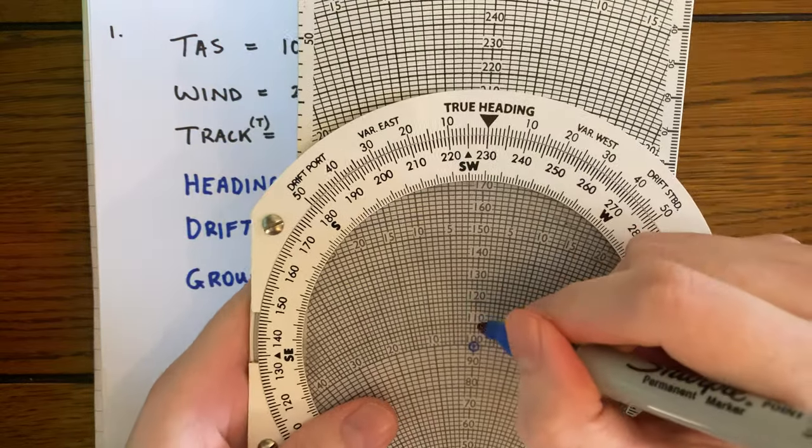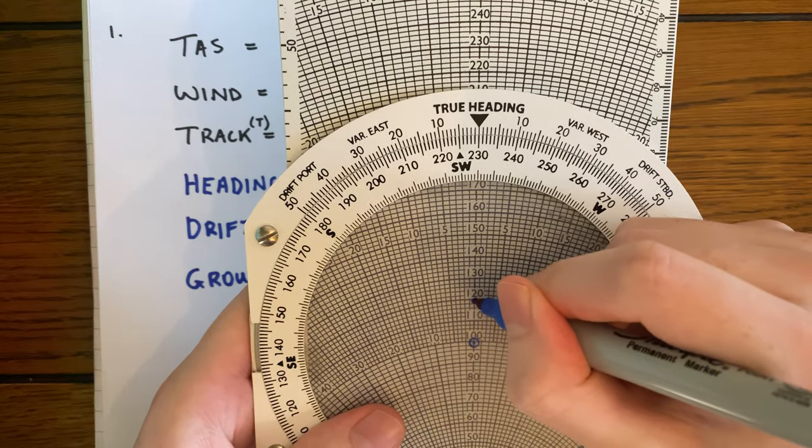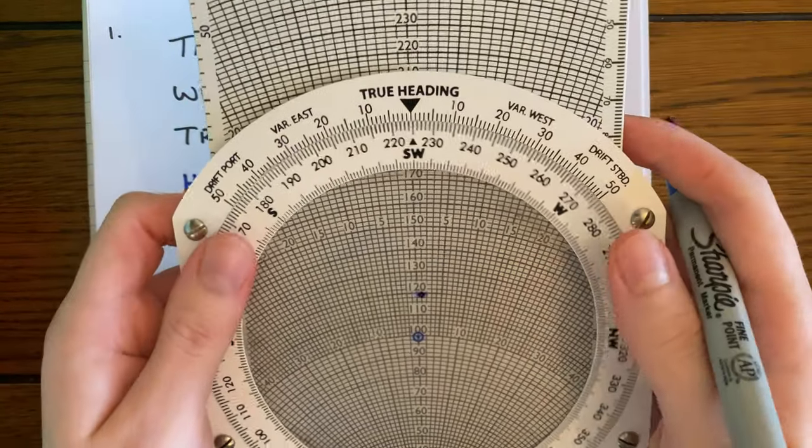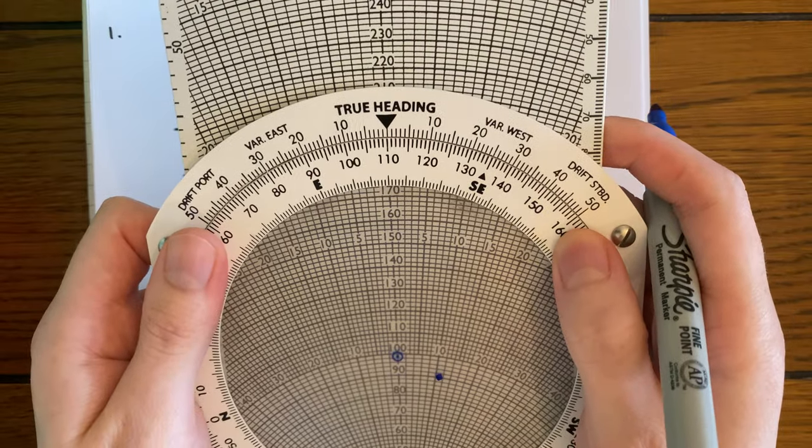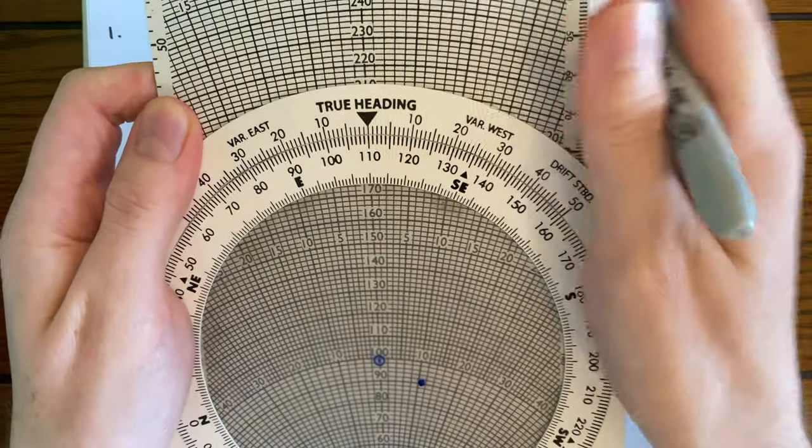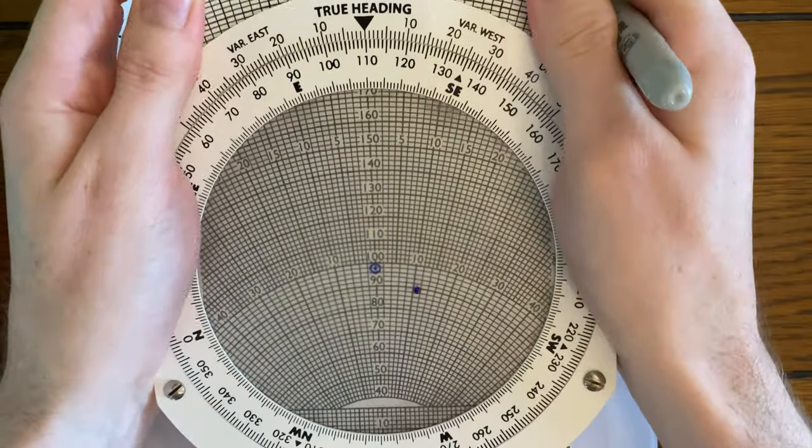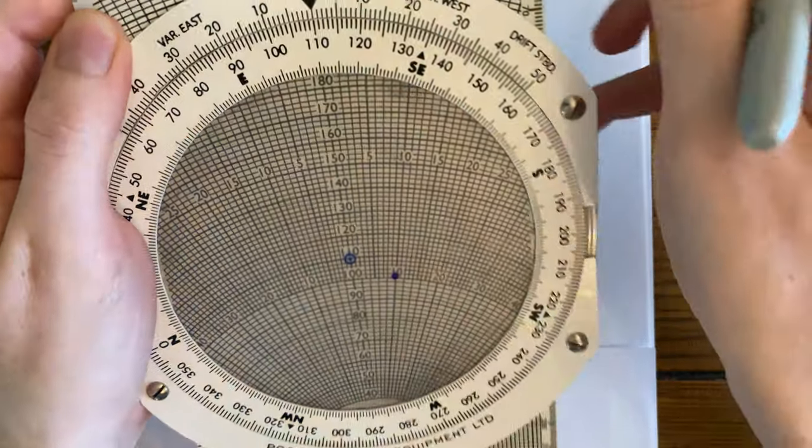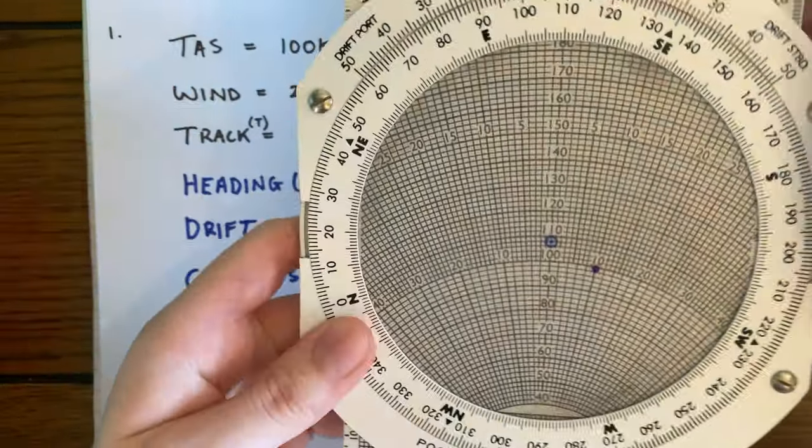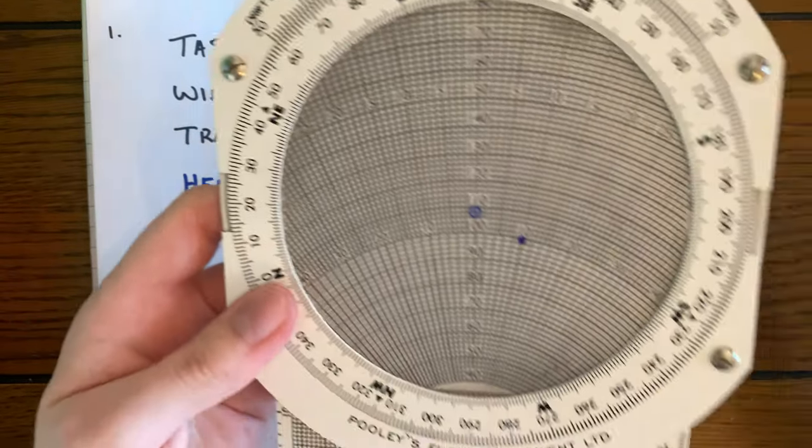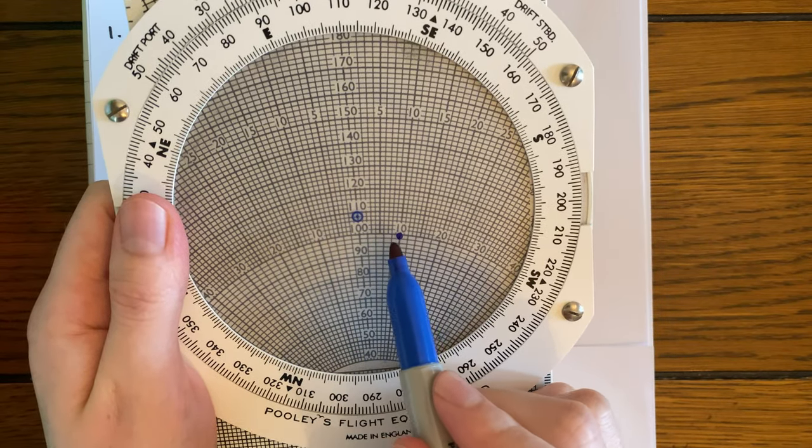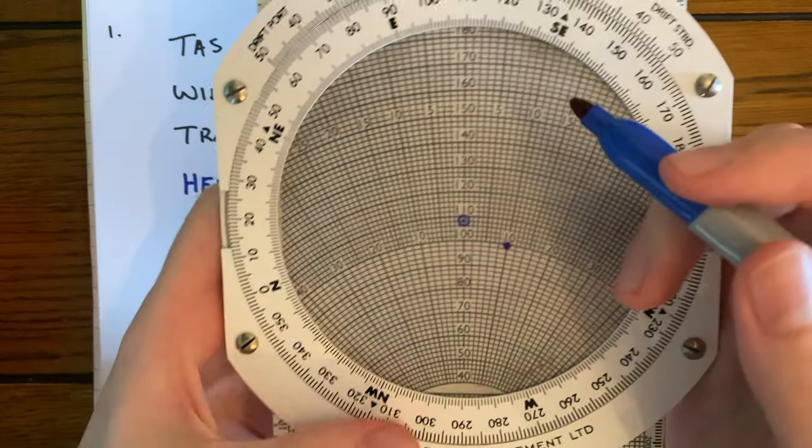So we'll mark 20 knots up—so there's 120. And now we can just go to our track of 110 degrees. We'll spin this round once again. There's 110. And what we do is adjust our slide rule here—we're sliding it up and down. What we want to do is line up our point that we've drawn on with our starting TAS. So our TAS to start off with, we said was 100. We want to line up this dot with the 100 line, which is along here.